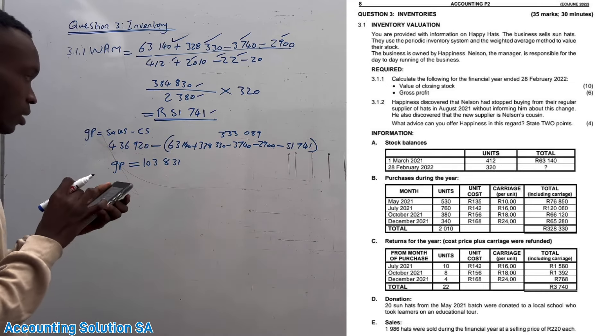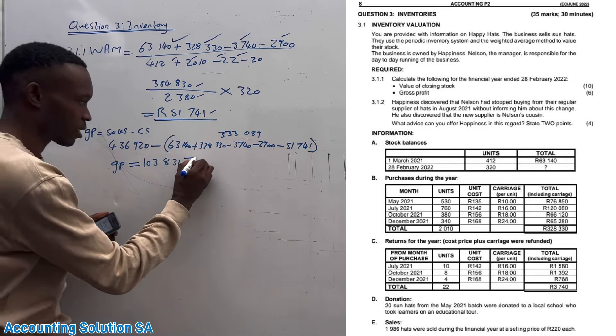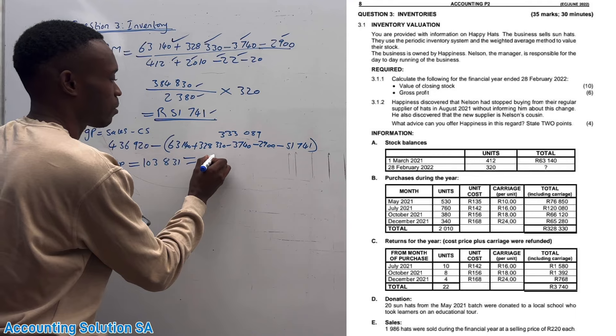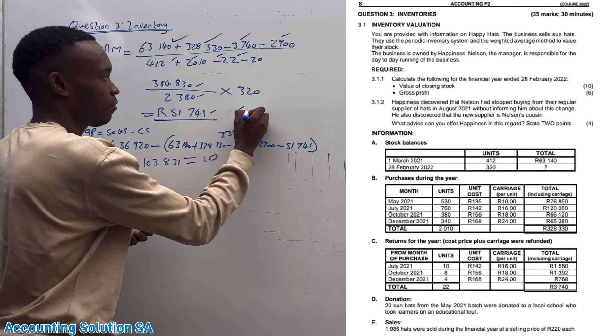Sales minus cost of sales gives a gross profit of 103,831. That's how you complete this section — it was 6 marks for gross profit and 10 marks for the closing stock calculation.